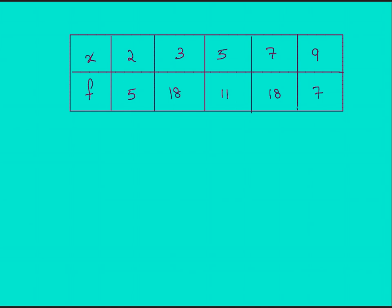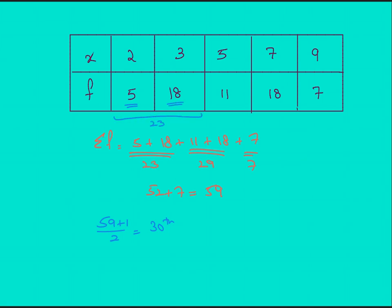Here is a similar frequency distribution problem. The total frequency is 5 plus 18 plus 11 plus 18 plus 7 equals 59. The median position is (59+1)/2 equals 30th, so the 30th value itself is the median. The first 5 values are 2, the next 18 are 3 — that's 23 — and the next 11 are 5, totaling 34. Since 30 lies between 23 and 34, the 30th value is 5. The median is 5.